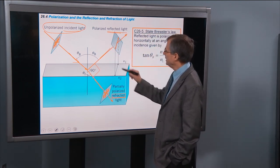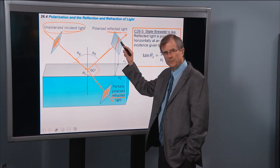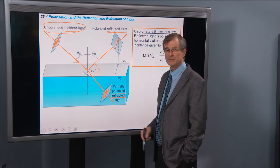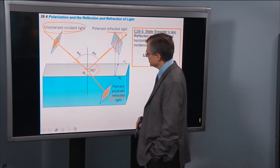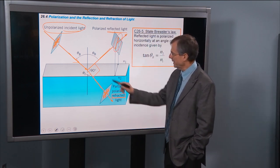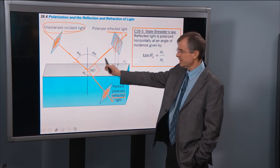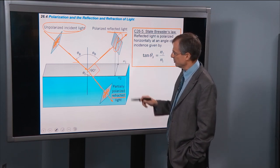Then the reflected light will be polarized horizontally. So the only part of the light that actually makes it out of that reflection is polarized horizontally.